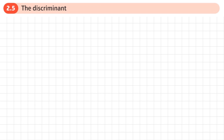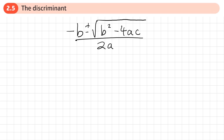This is the fifth section of chapter 2 on quadratics, and this section is about the discriminant. Here I've got the quadratic formula written out, and I'm going to be focusing on the bit underneath the square root sign: b squared minus 4ac.